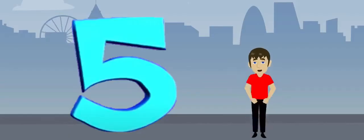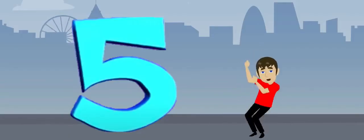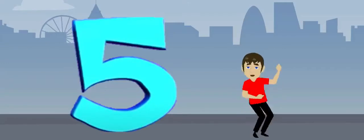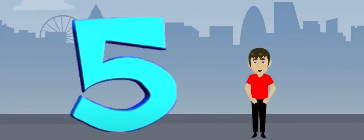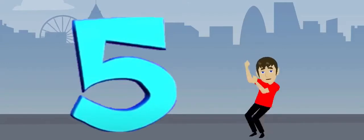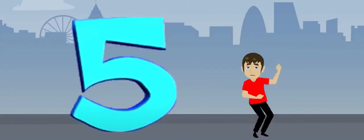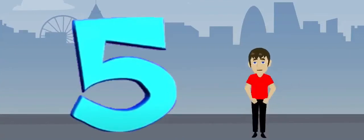When we multiply a number by 5, it ends with 5 and ends with 0. Let's do 5 times table.